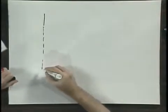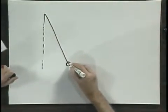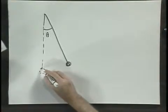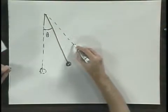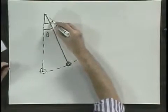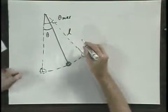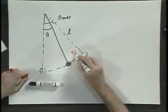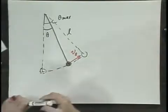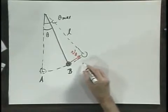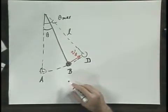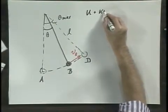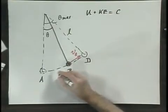Here's the pendulum, viewed when the angle is theta. This is the equilibrium position, and the pendulum will ultimately swing all the way to an angle theta max. There's a length L, and the velocity at point B is V of theta. We have point A at equilibrium, point B, and let's call this point D. If there is no friction of any kind, then the sum of potential energy and kinetic energy must be conserved here, here, and here — it must be the same constant.